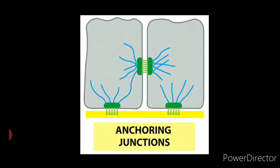In this video, I will discuss what anchoring junctions are and their types. They are classified into three types: first, spot desmosomes; second, belt desmosomes; and third, hemidesmosomes. Let us understand anchoring junctions first, followed by its types.